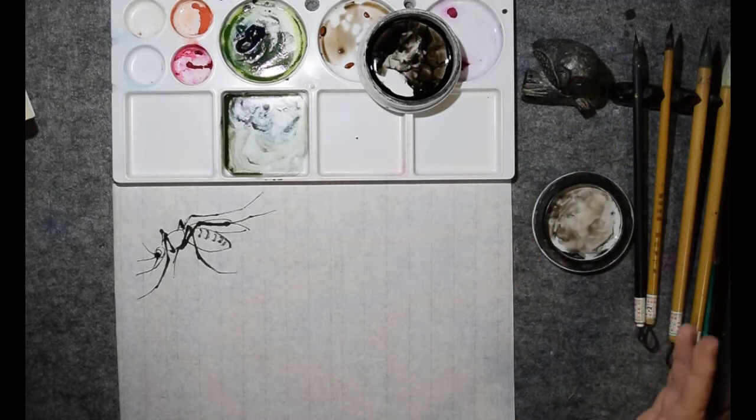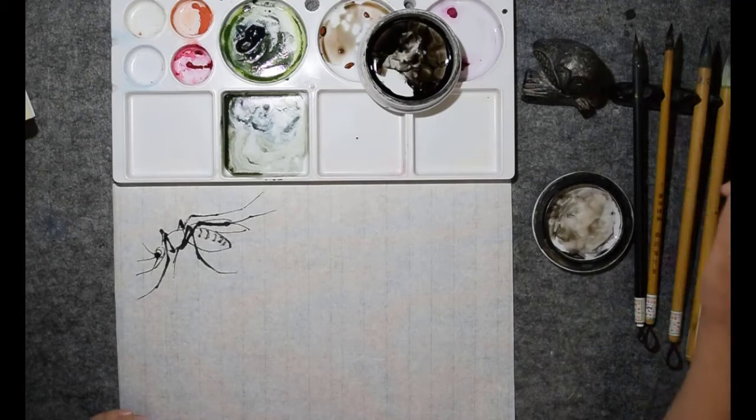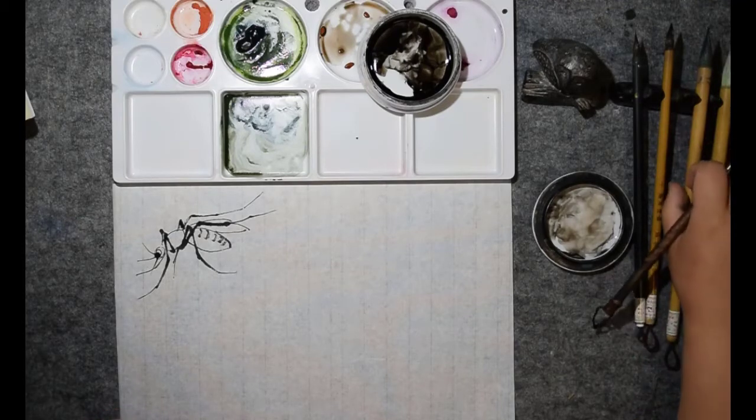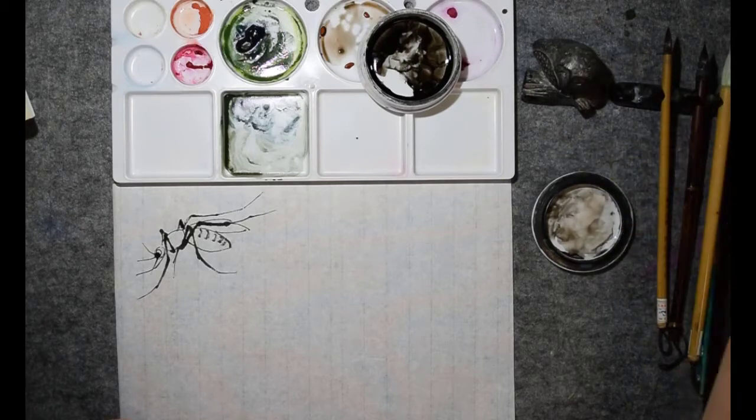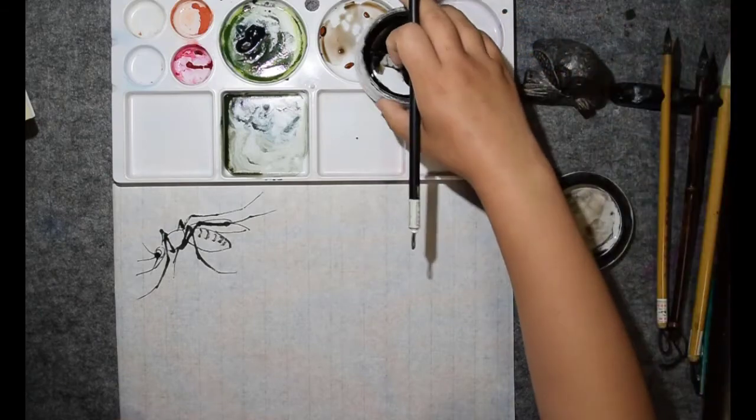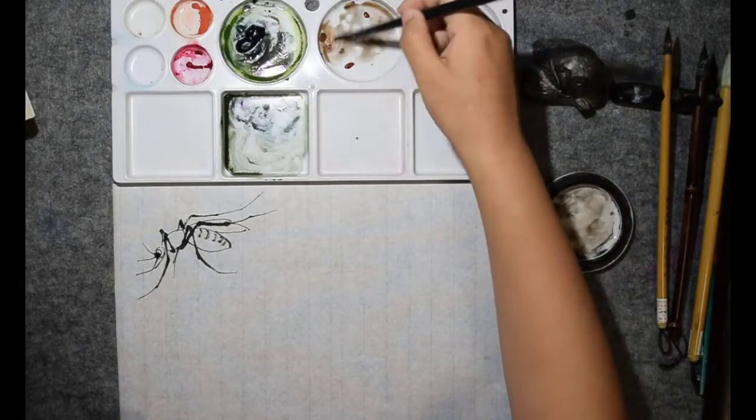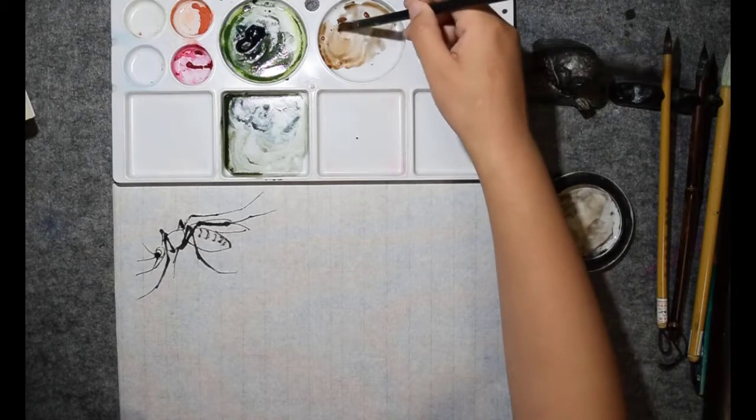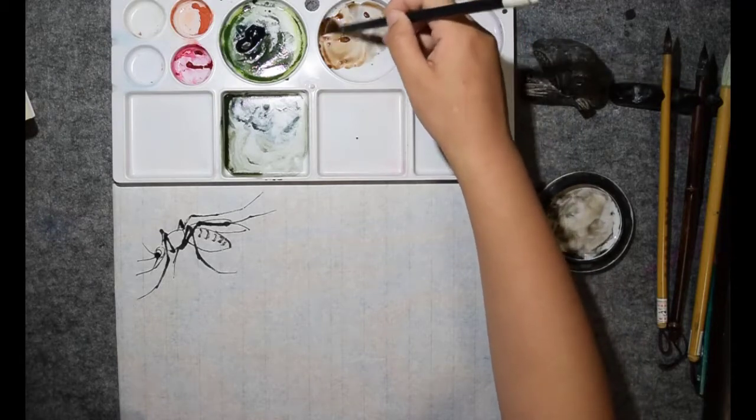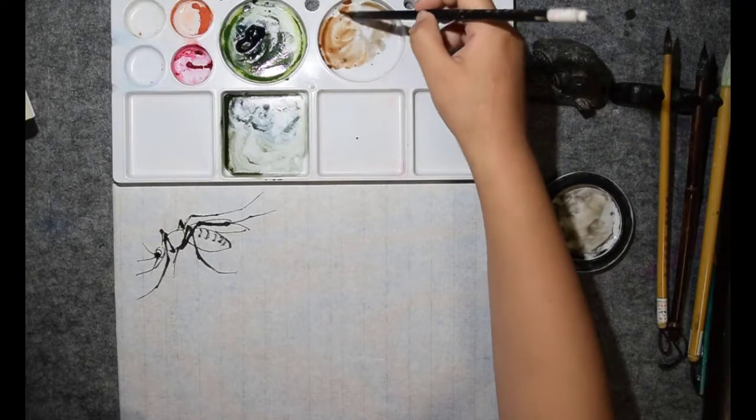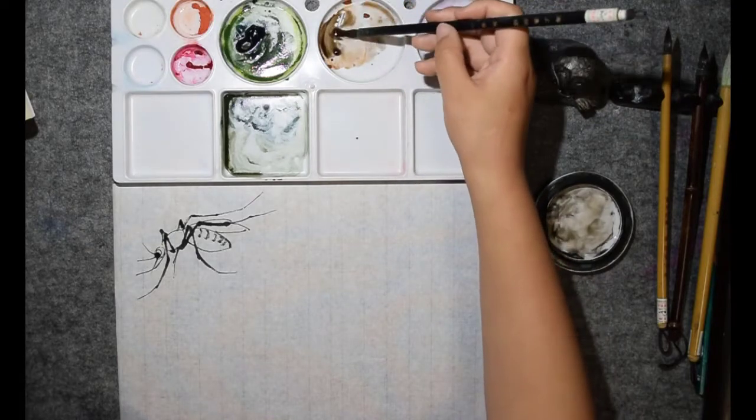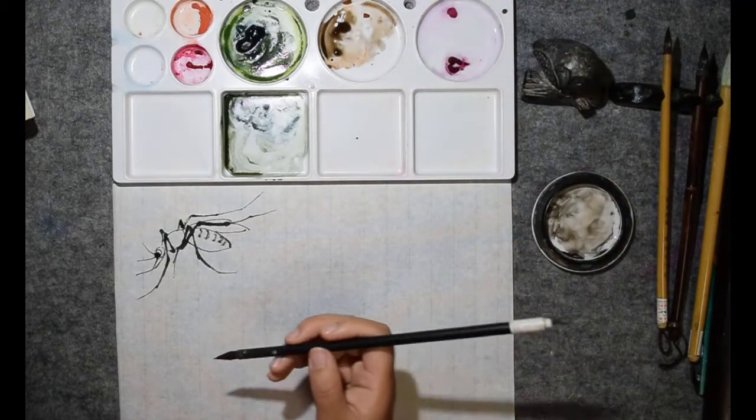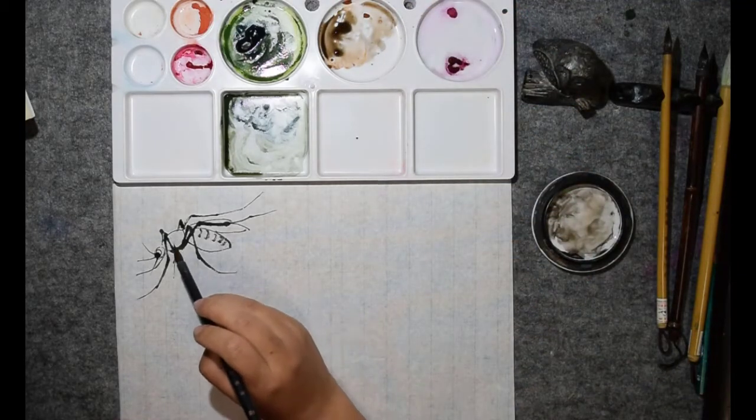Okay, let's use a dark brown color. This is brown, and add a little bit of ink. Dark brown to paint the mosquito. For you, for example, use this one.